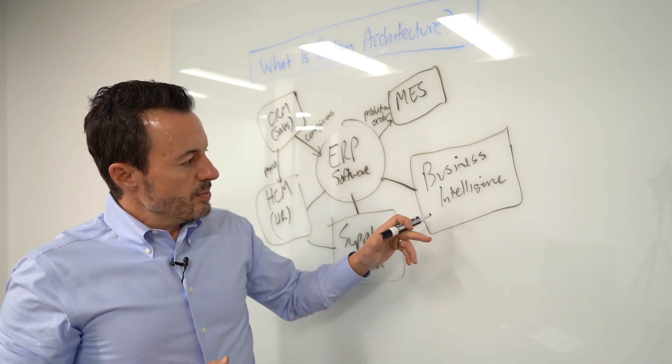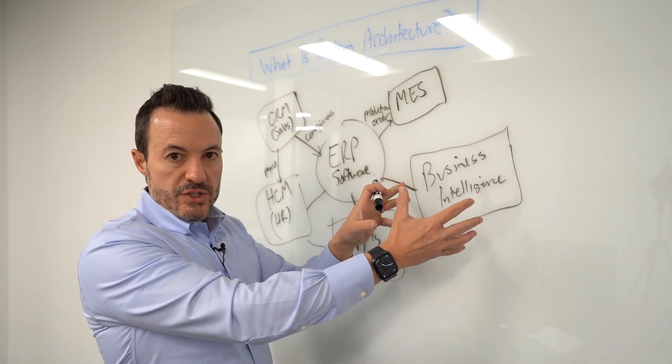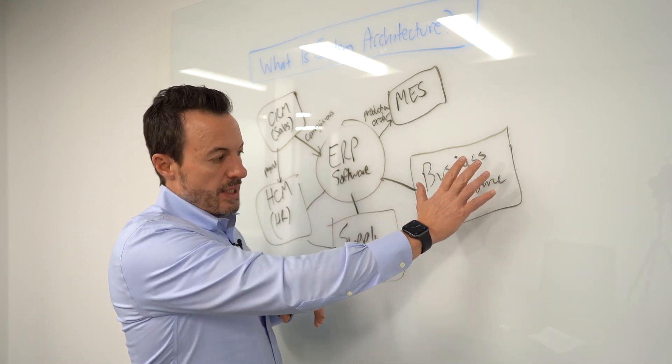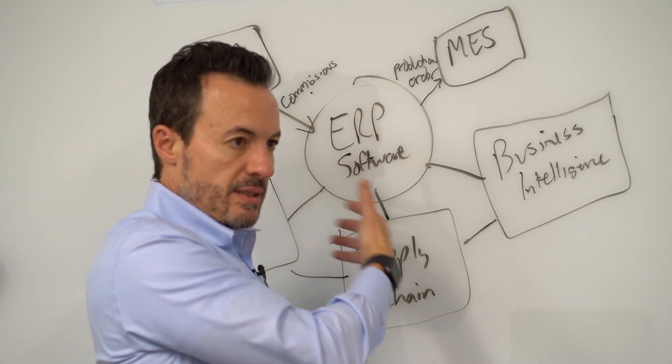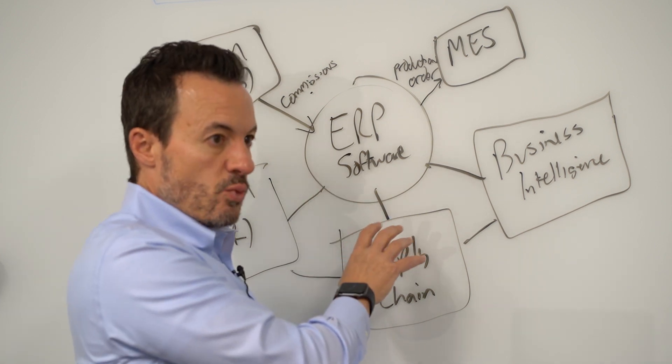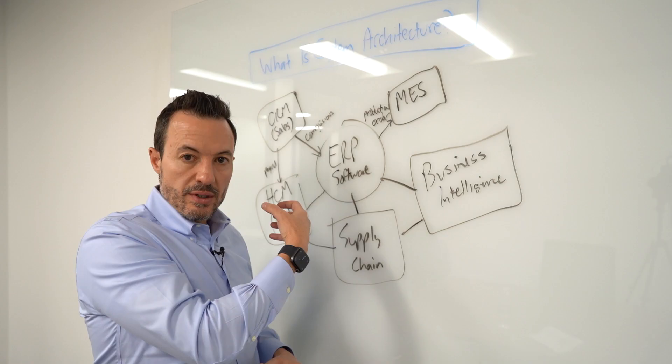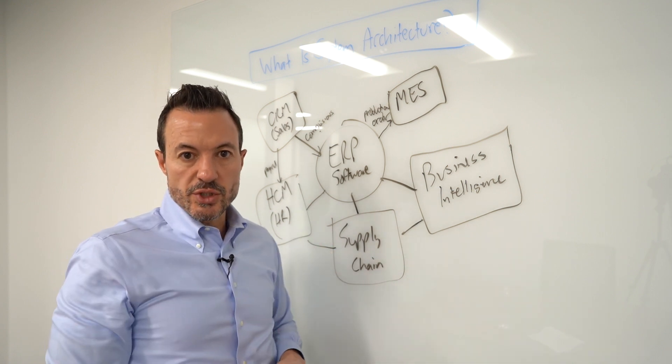And then also, business intelligence, analytics, and reporting is critical. So even if you don't have a standalone business intelligence system, let's assume you don't have this for a minute, you might be relying on these systems over here to provide the reports, the analytics, the business intelligence you need. But you need to define, as a system architect, what types of reports do we need and where are those reports going to pull the data that we need to get the visibility we're looking for.